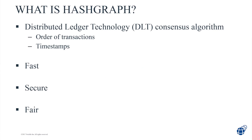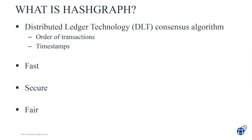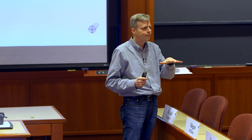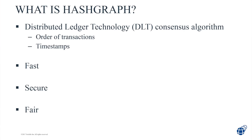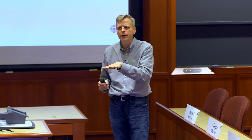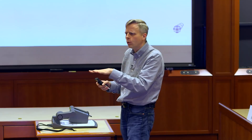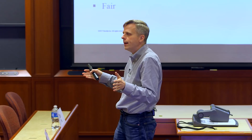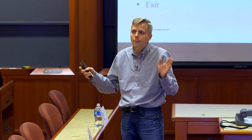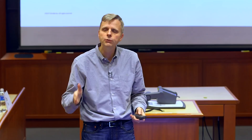So what is Hashgraph? Hashgraph is a distributed ledger technology — a consensus algorithm you can use for a DLT. DLTs are systems where a group of computers share information and don't trust each other. You don't particularly trust any given computer in the group to not corrupt or lie about the data, or try to stop us from coming to consensus. But we do trust the group as a whole to not have too many bad players.